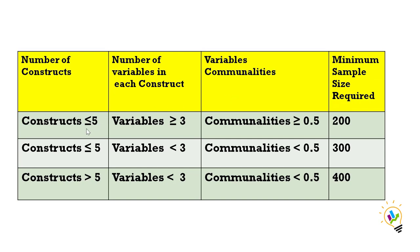You can see the first row. If the number of constructs is less than or equal to five, and the number of variables in each construct is more than or equal to three, and communalities are greater than or equal to 0.5, we need a sample size of 200. If the constructs are less than or equal to five, but variables in each construct is less than three, and variable communality is less than 0.5, we need a sample of 300.